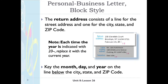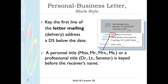Take note that each time the year is indicated with '2000,' replace it with the current year. The next part is the letter mailing address. You're going to key the first line of the delivery address a double space below the date, so you'll hit enter twice.